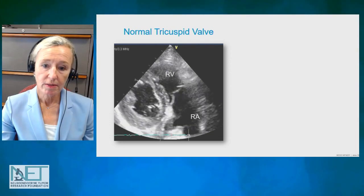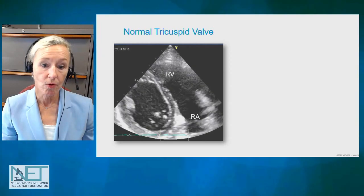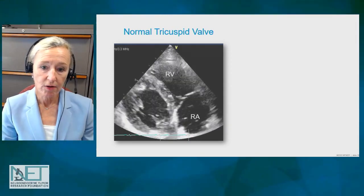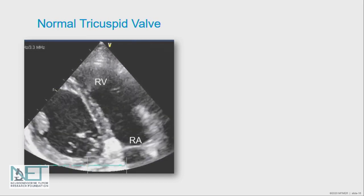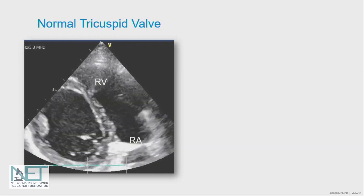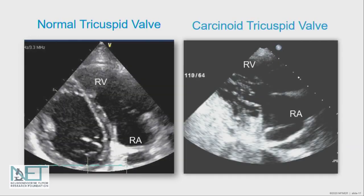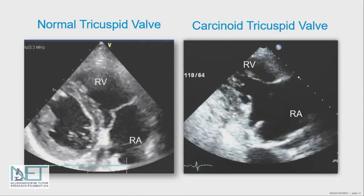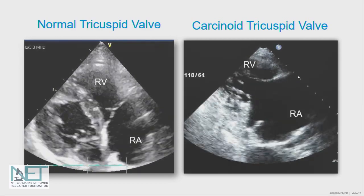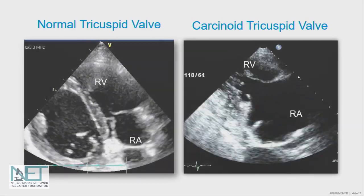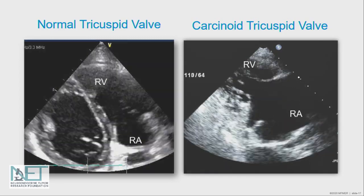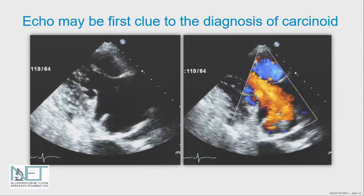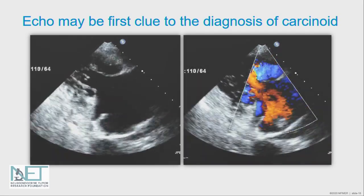An echocardiogram is really the best way to make the diagnosis of carcinoid heart disease. To explain how this is identified, it's good to look at a normal echocardiogram. There you can see the right ventricle as depicted by RV and right atrium as depicted by RA. The valve between the right atrium and the right ventricle is the tricuspid valve — that's a normal tricuspid valve you can see on your screen. Contrast that to the valve in a patient who has carcinoid tricuspid valve disease — how abnormal it looks. It's fixed and open; those two leaflets don't even come close to touching each other. And as we add color to that same patient, there's severe backflow or regurgitation, consistent with severe tricuspid valve disease from carcinoid.